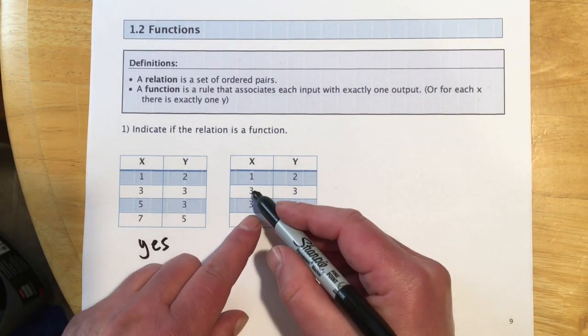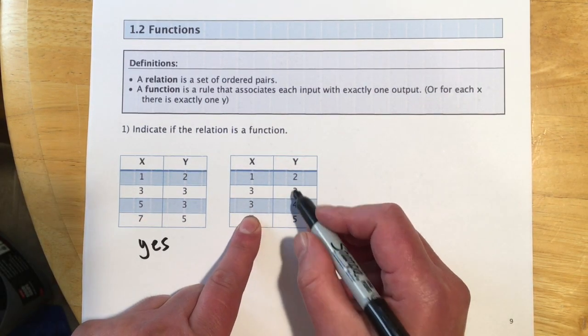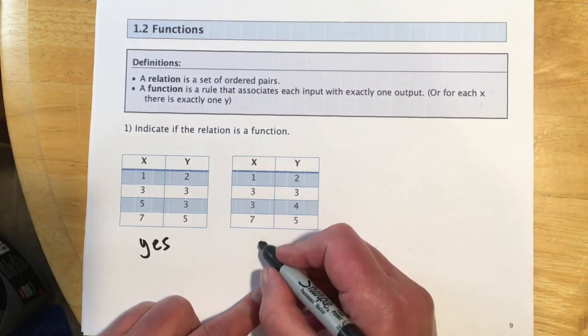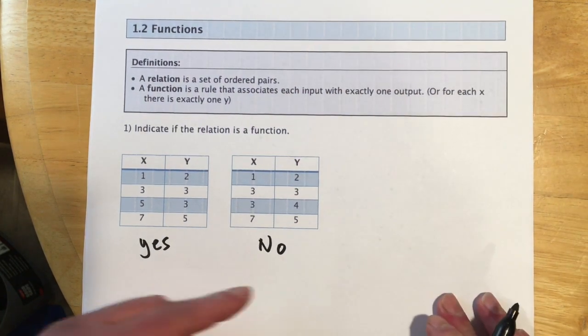Here on this one, when x is 3, it could be 3 or 4. So there's two different y values for that given x value. So for that we would say no, it's not a function.